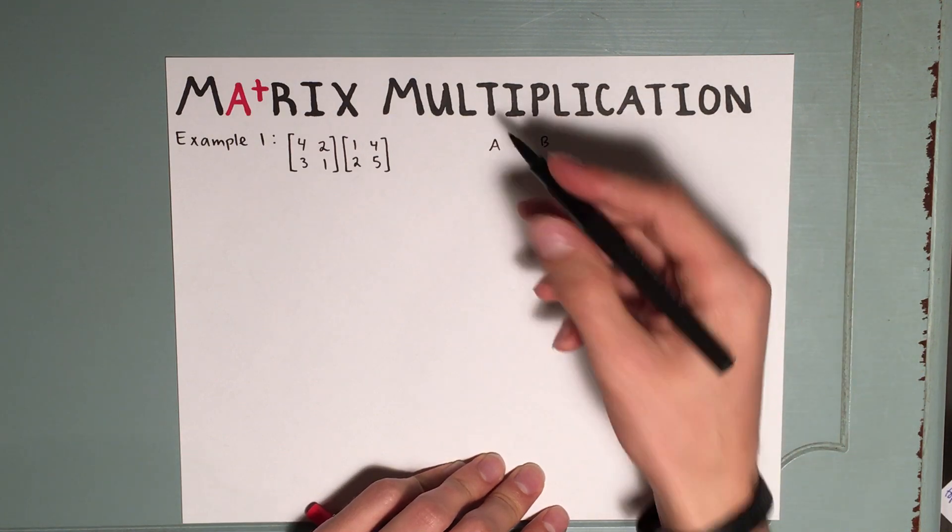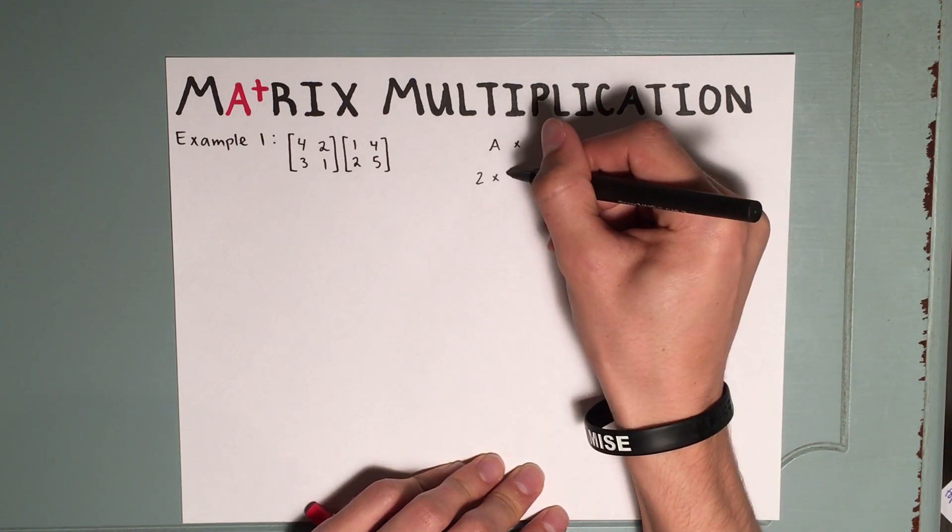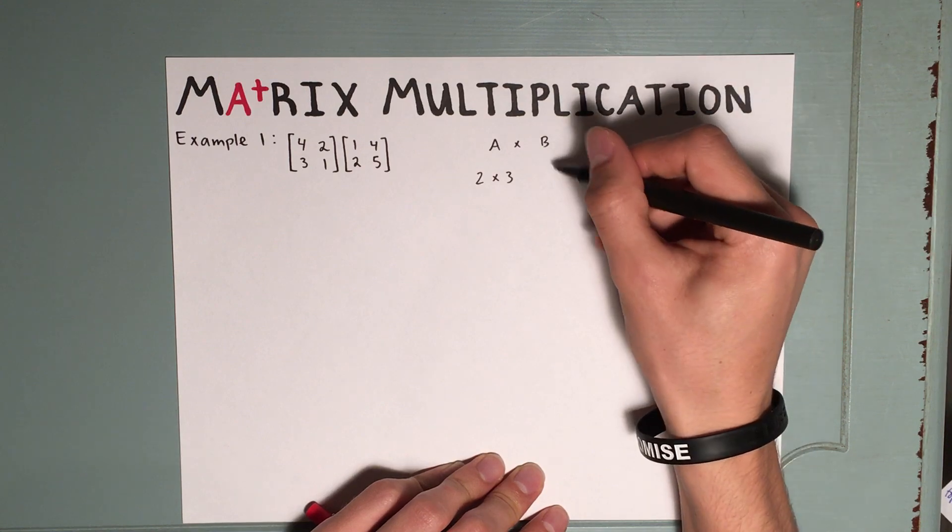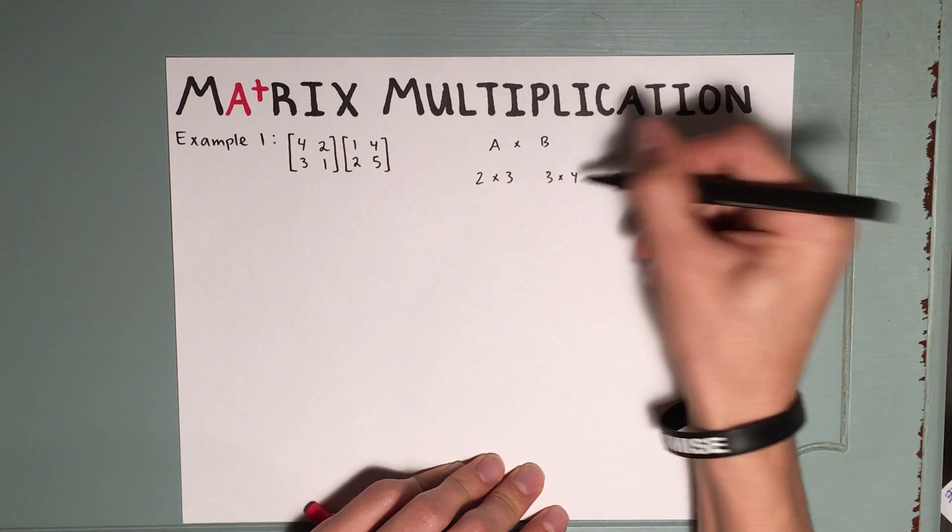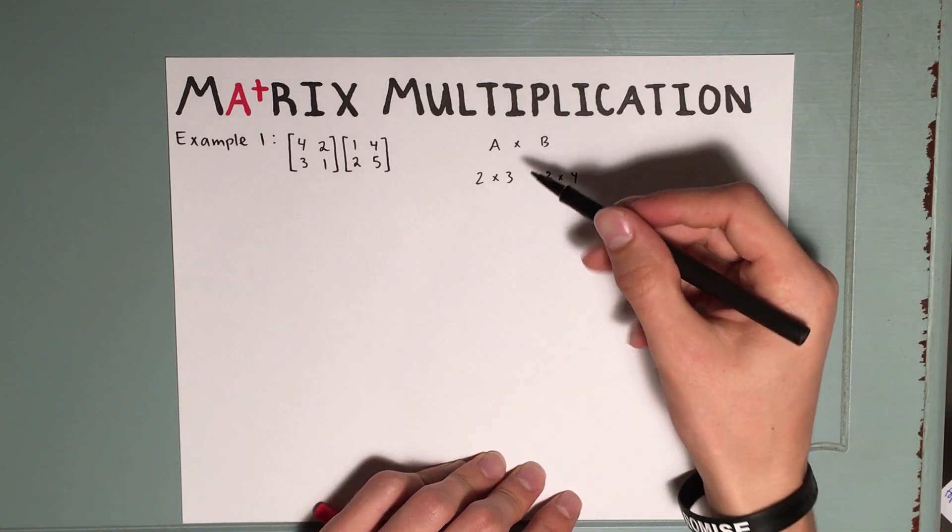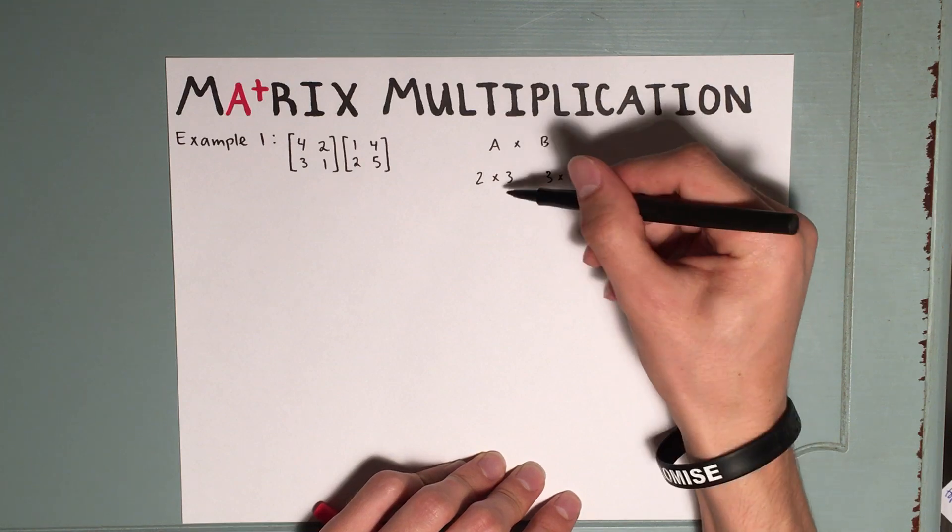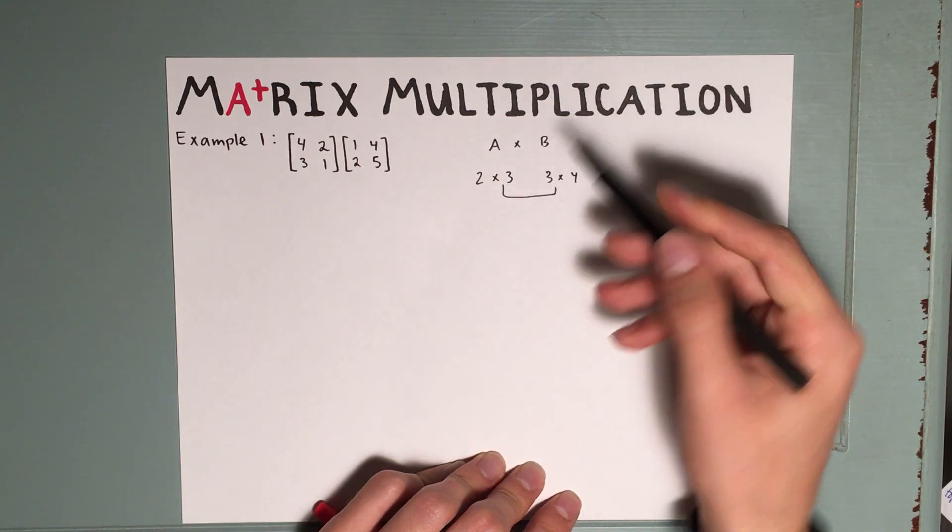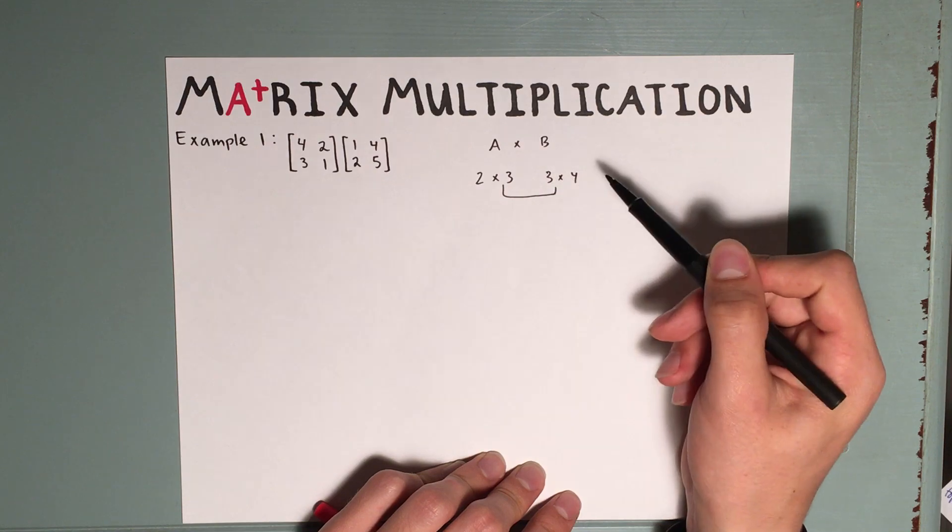So for example, if matrix A is a 2 by 3 matrix, and matrix B is a 3 by 4 matrix, then we know that we're allowed to multiply these matrices if these inner numbers match. So since 3 does match 3, we're allowed to multiply them.